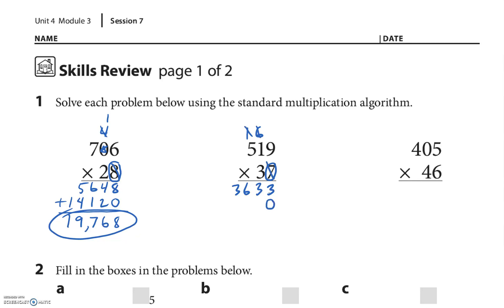Put a placeholder. 3 times 9 is 27, carry the 2. 1 times 3 is 3 plus 2 is 5. 5 times 3 is 15 — nothing carried over, so I'm putting 15. 3, 0 — carry that 1 — so that's a 6. Plus 5 is 11, plus 1 is 12 — carry another 1. That's 9. Answer: 19,203.